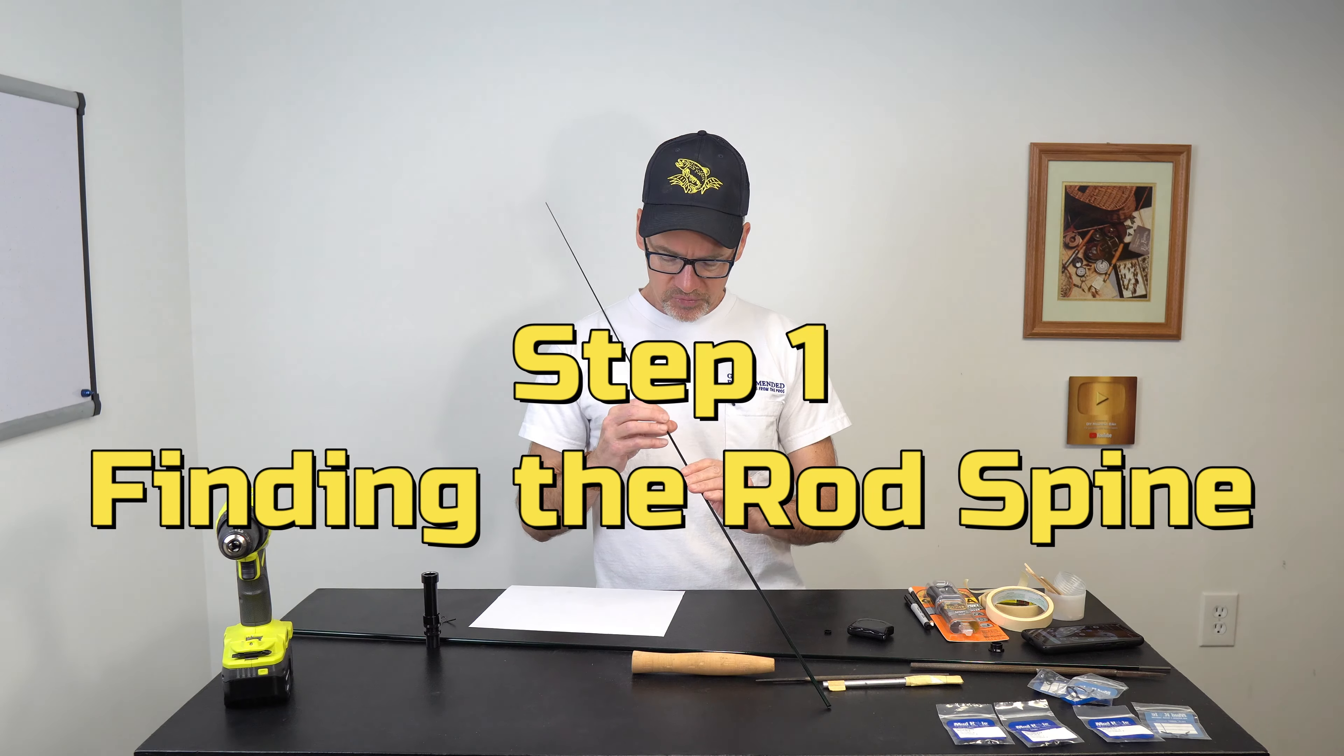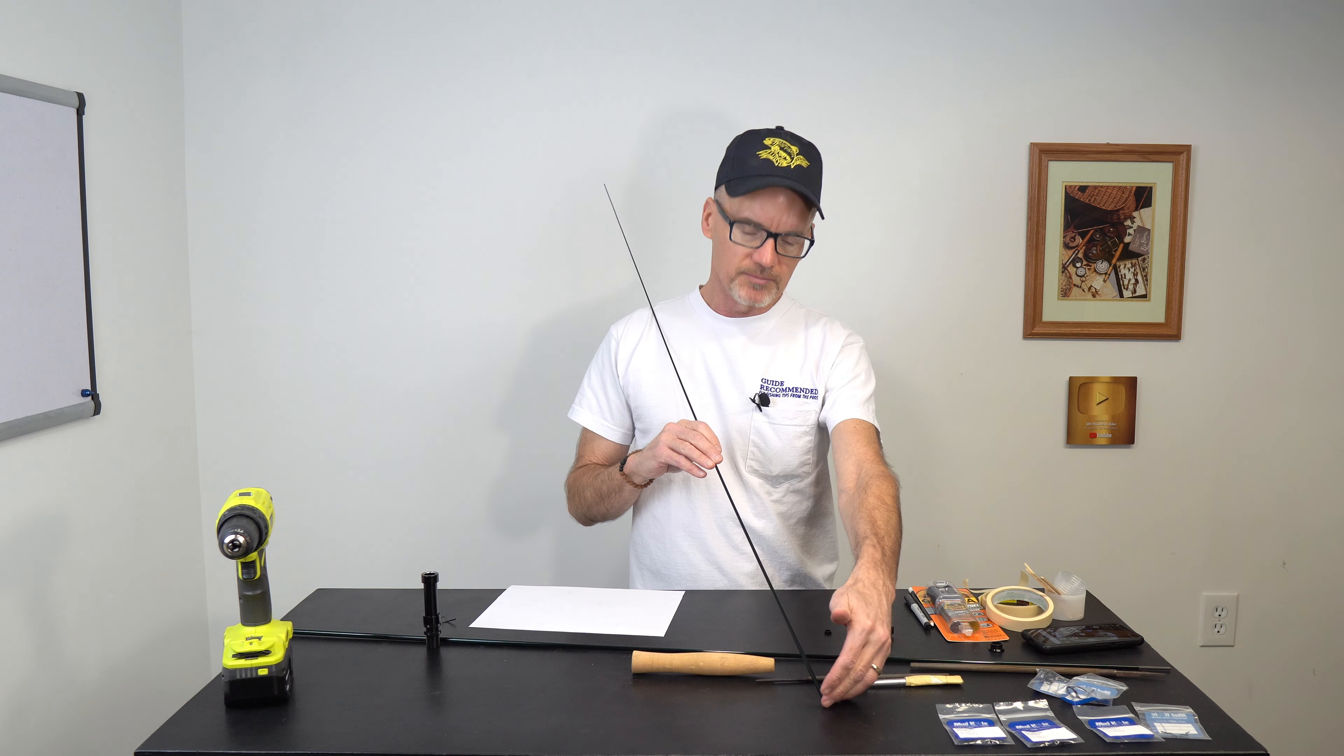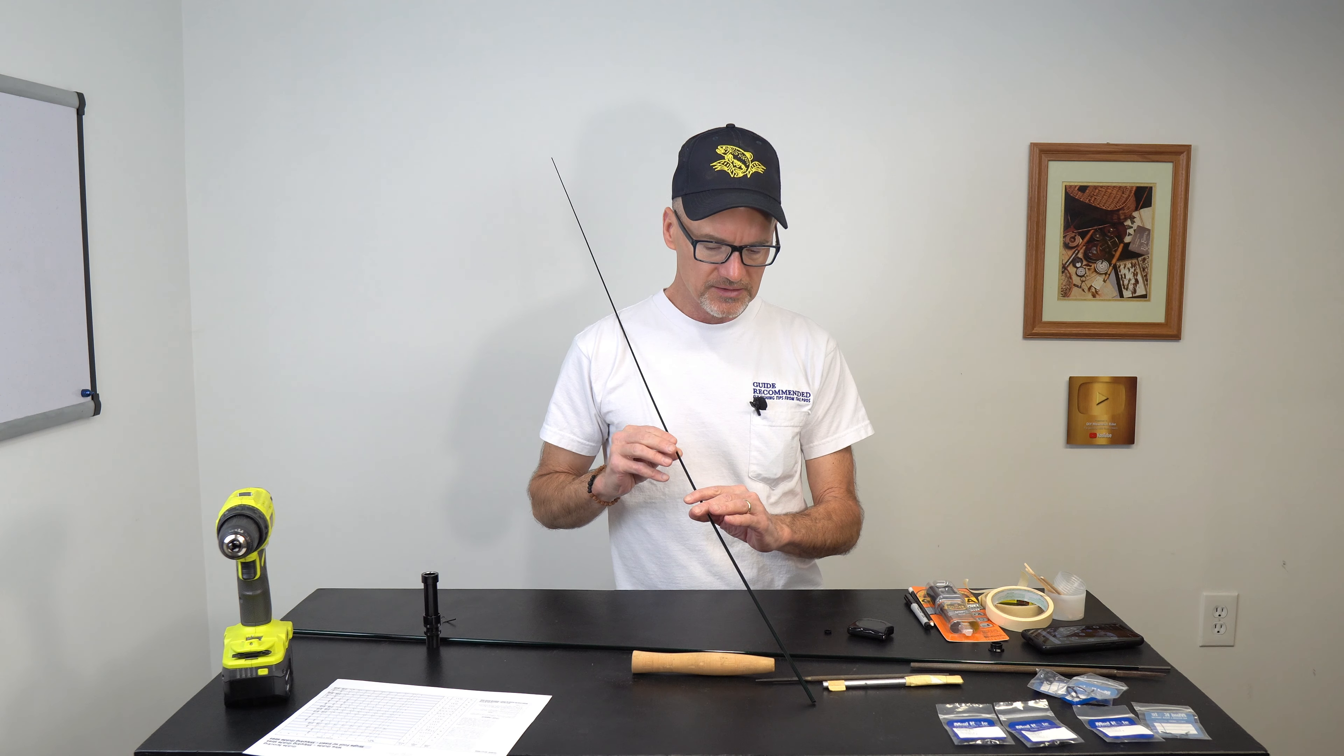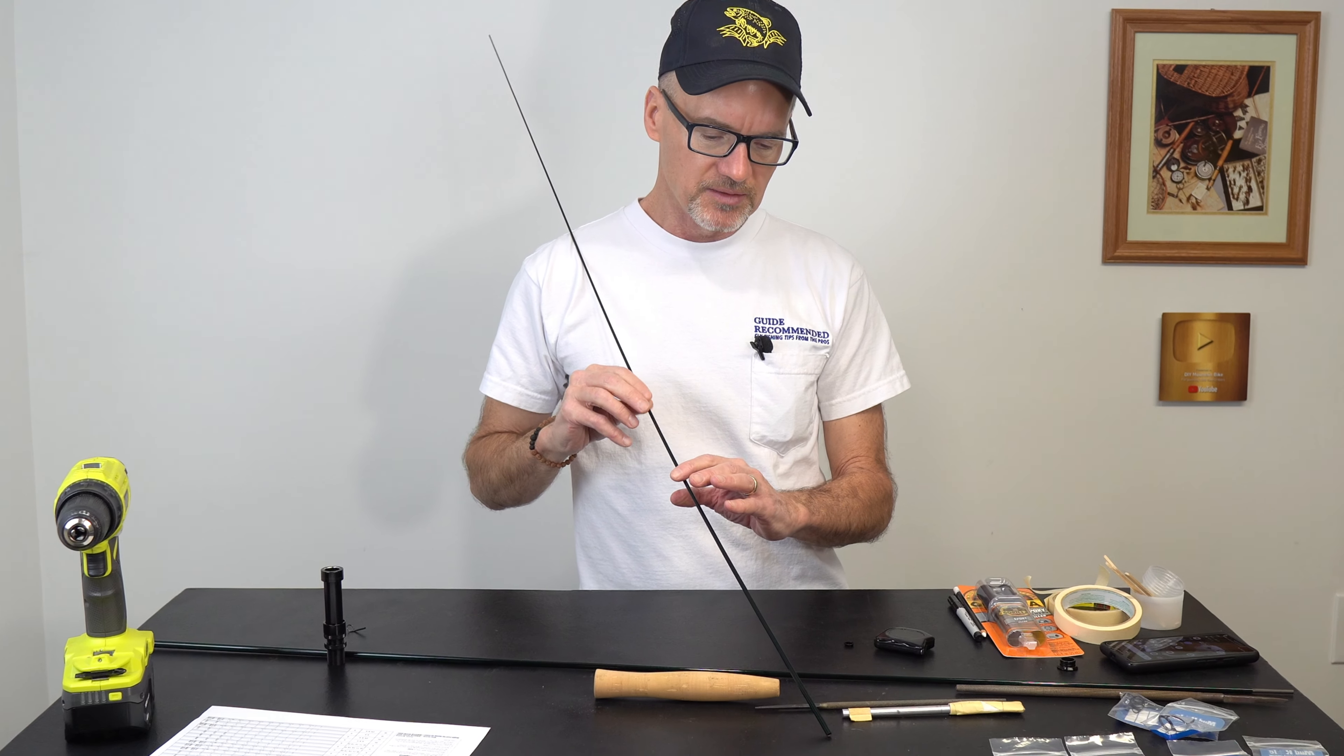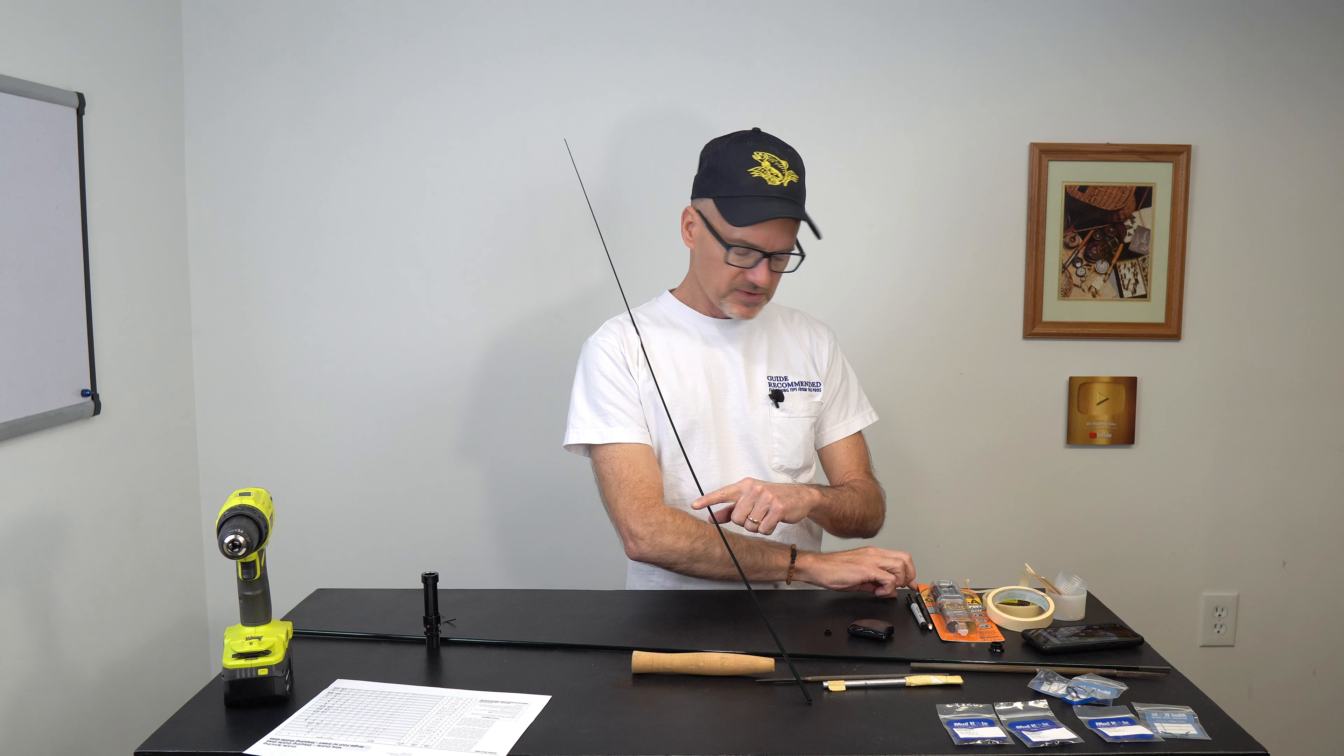Step one: finding the spine on your fly rod. Put the rod blank on my shoulder and I've got the butt section, largest diameter, down on a bench and I will roll that on the table. You're going to feel two different bumps, or actually it'll dip down. You want to pick the major dip. There is mine, pick that major dip.